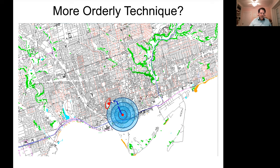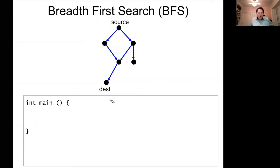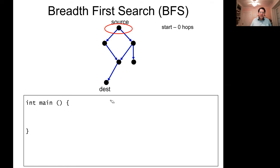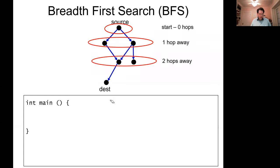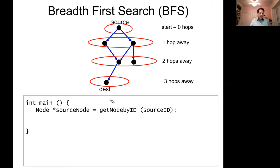Once you find the destination, you follow those stored reaching edges to get back to the source and create our path. Breadth-first search essentially expands outwards in circles in the graph — it looks at things really close to the source, then things close to those, in waves until it hits the destination. How do we code that? I'll start with pseudo-code.